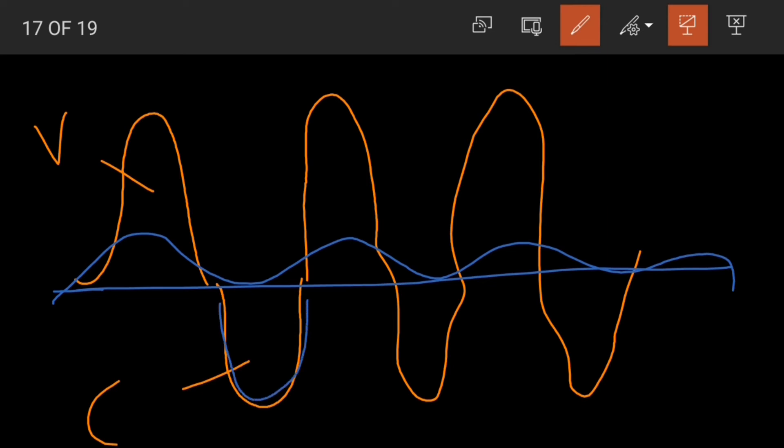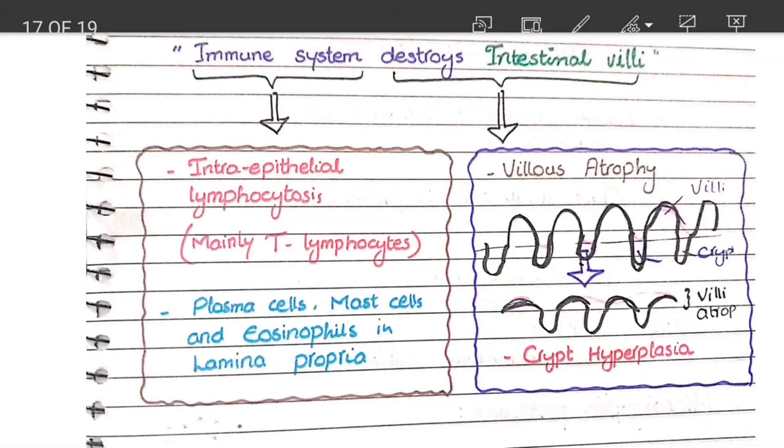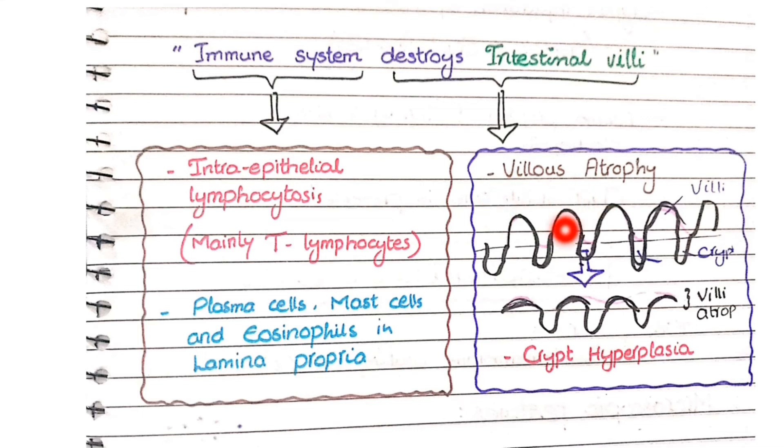So in response to the damage of these villi, these crypts undergo hyperplasia. Remember the points: in celiac disease these villi are atrophied while the crypts become hyperplastic. So you see villus atrophy and crypt hyperplasia.